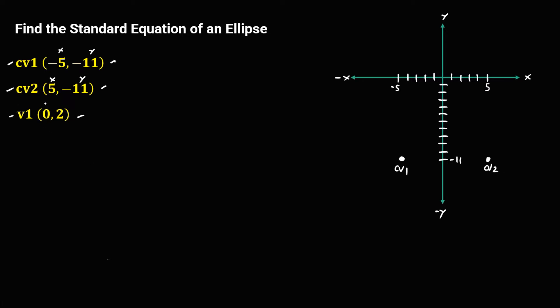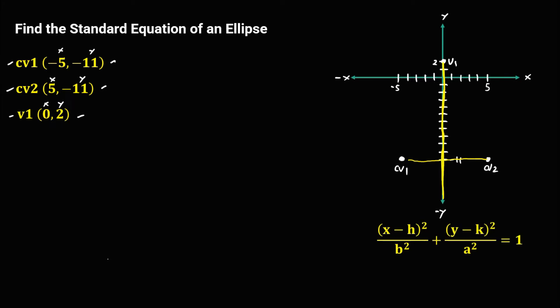For the vertex, x is 0 and y is positive 2. So the vertex is at (0, 2). Observing the graph, the co-vertices are in a vertical position. Since the co-vertices are in vertical position, this ellipse is a vertical ellipse. The formula for a vertical ellipse is x² over b² plus y² over a² equals 1.